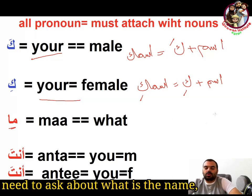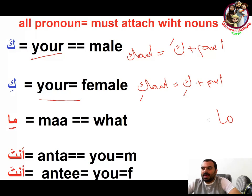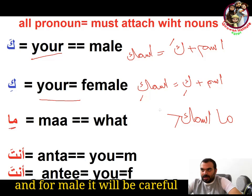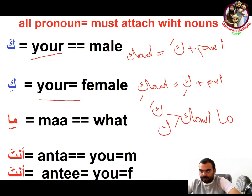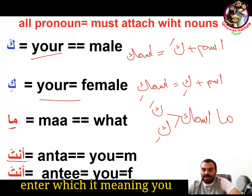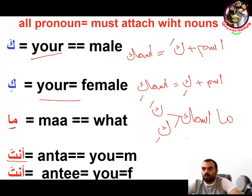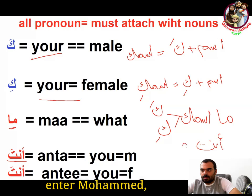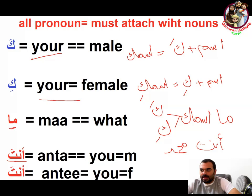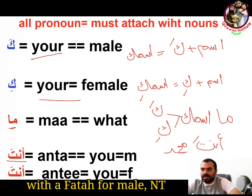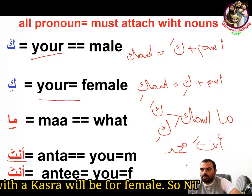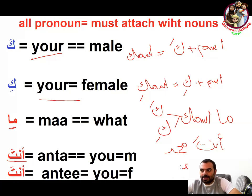So if I need to ask 'what is the name,' I say 'ma ismuka' — kaf with fatha for male, kaf with kasra for female, giving 'ma ismuki.' And 'anta' means 'you' for male — for example, 'anta Muhammad.' For female, 'anti' with kasra — for example, 'anti Mariam.'